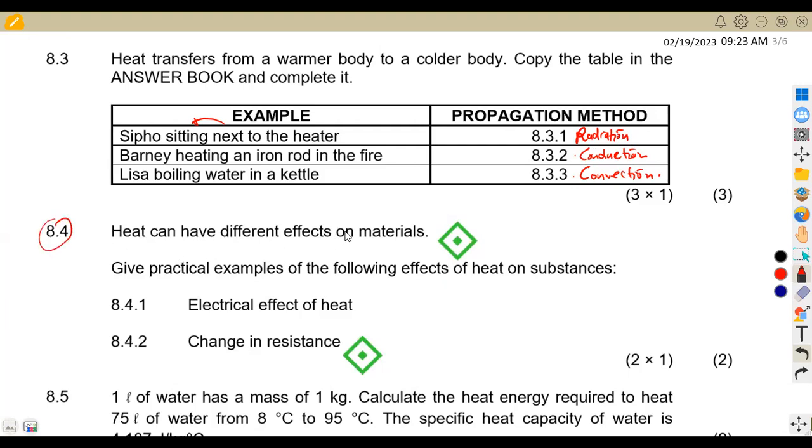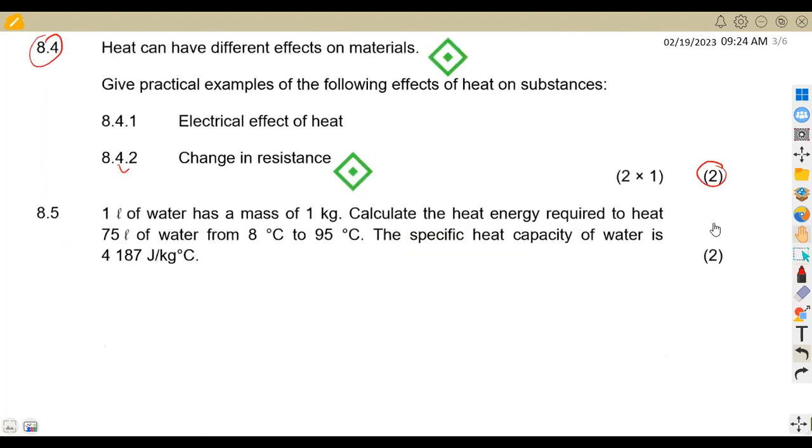8.4. Heat can have different effects on materials. Give practical examples of the following effects of heat on substances. 8.41, electrical effect of heat. What is that electrical effect of heat? This is actually on a thermocouple where we've got the difference in changes of heat, the temperature differences. Then we are given the change in resistance. So where do we have that change in resistance? This can happen where metals, where resistance increases with an increase in temperature. So this one's your theory. I just advise you guys to revise your theory as much as you can.